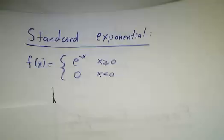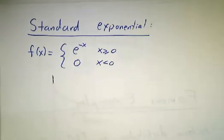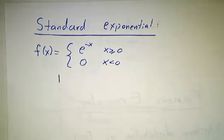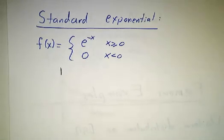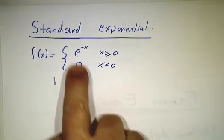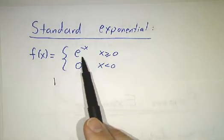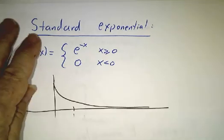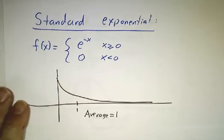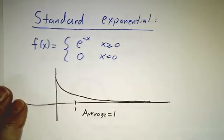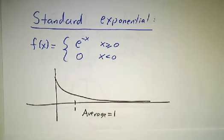Another example that comes up a lot is called the exponential distribution. Now the standard exponential distribution is just given by density function e to the minus x. And you can check that the integral from zero to infinity of e to the minus x is one. And we will calculate in the next video that the average value is in fact one.